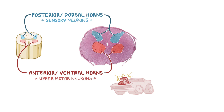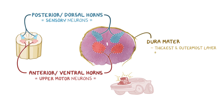The entire CNS is also covered by layers of connective tissue called the meninges. The portion of the meninges that can be seen in this low-power image is the dura mater, which is the thickest and outermost layer of the meninges.